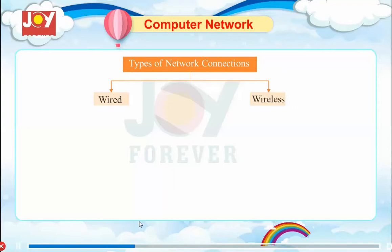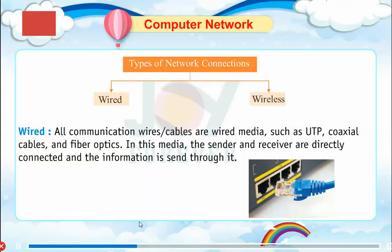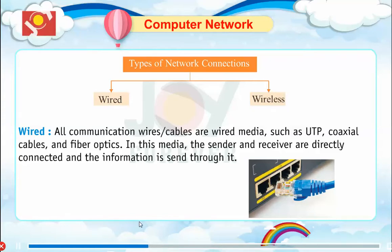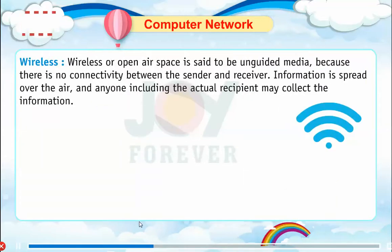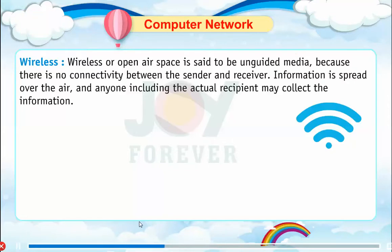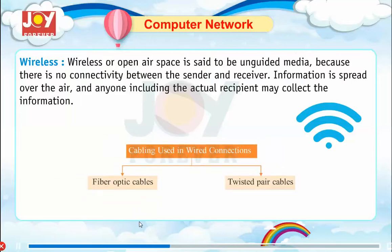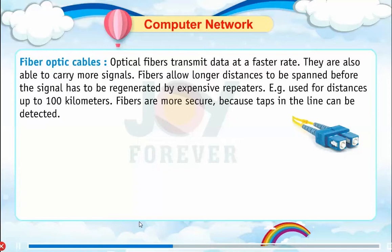Types of network connections. Wired: all communication wires and cables are wired media, such as UTP, coaxial cables, and fiber optics. In this media, the sender and receiver are directly connected and information is sent through it. Wireless: wireless or open air space is said to be unguided media because there is no connectivity between the sender and receiver. Information is spread over the air and anyone, including the actual recipient, may collect the information.